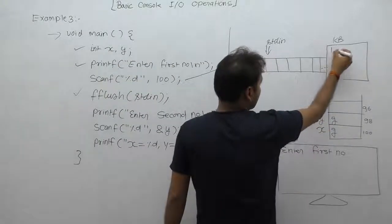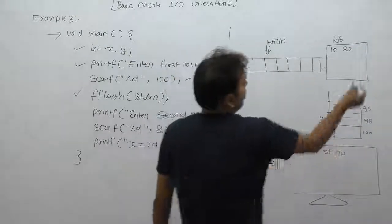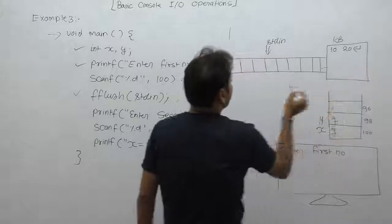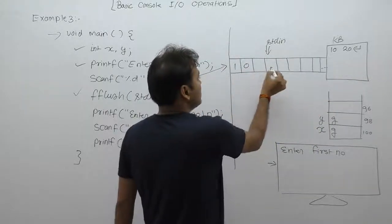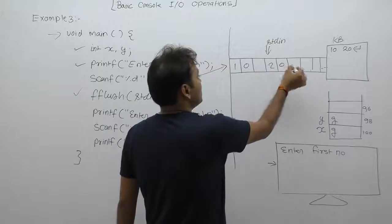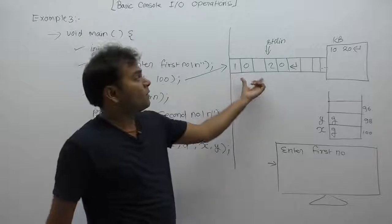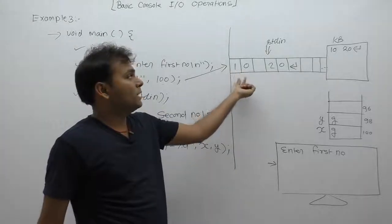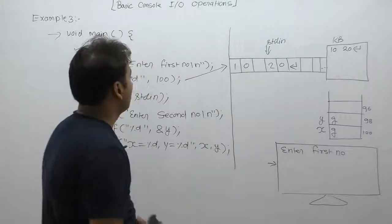Then after that, enter something like 10 space 20, then enter. When you press the enter key, characters will be stored: one, zero, space, two, zero, then enter. Enter key, actual ASCII value is 48—sorry, ASCII value of 49, 48, and so on.